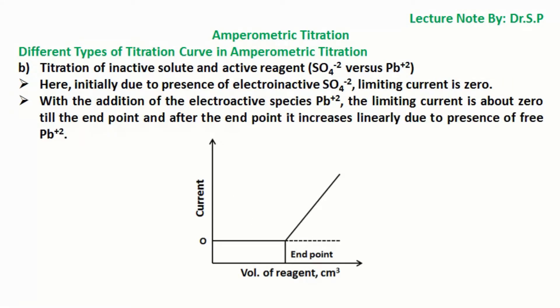Titration of inactive solute and active reagent, that is sulfate ion SO₄²⁻ versus lead ion Pb²⁺. Here, initially due to presence of electroinactive sulfate ion SO₄²⁻, limiting current is zero. With the addition of the electroactive species lead ion Pb²⁺, the limiting current is about zero till the end point and after the end point it increases linearly due to presence of free lead ion Pb²⁺.